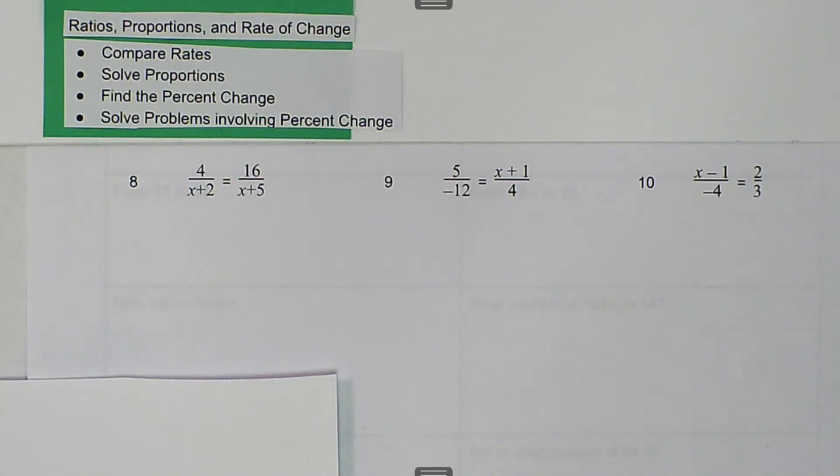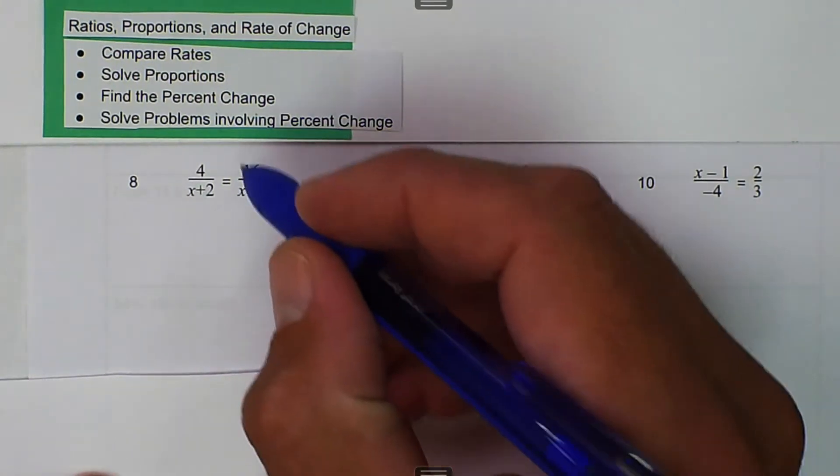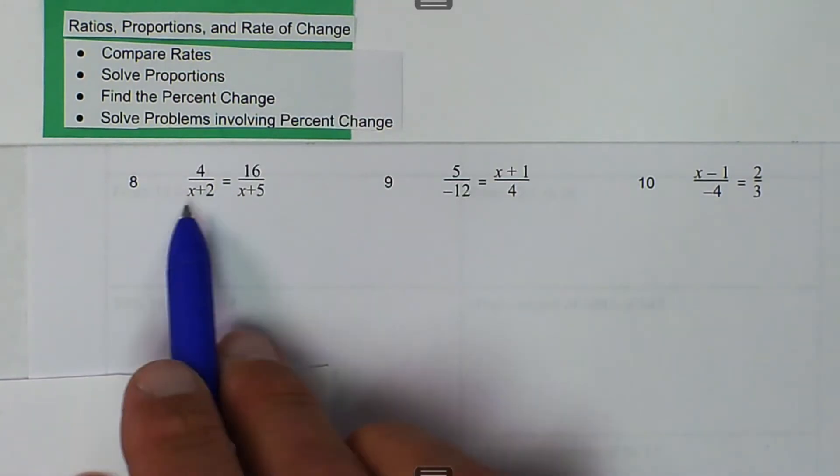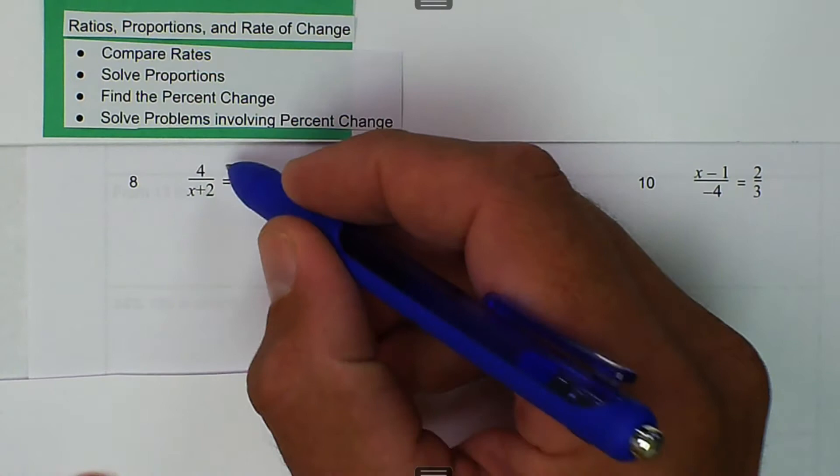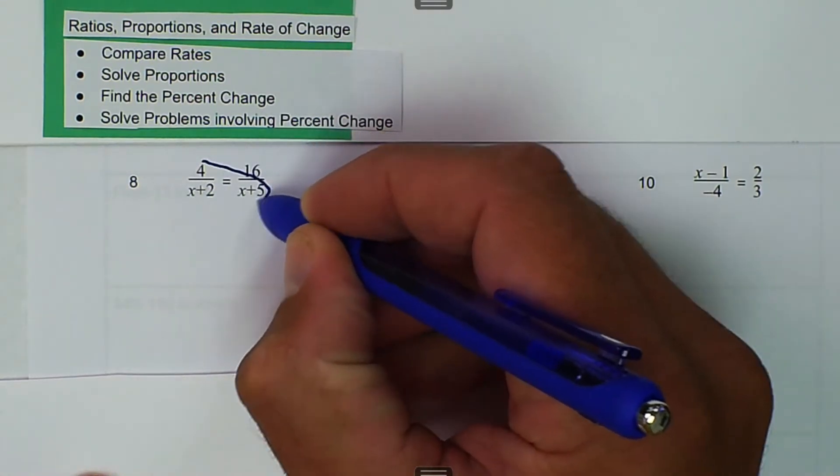We're talking about ratios, proportions, and rate of change, and here we have some proportions, and we like to solve them. We're going to use our means and extremes to get these in a form that we like. Right now we have these in fractions with variables in the denominator, and that's not a fun way to solve.